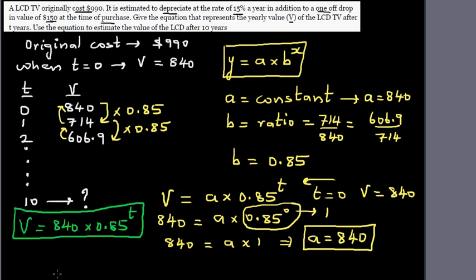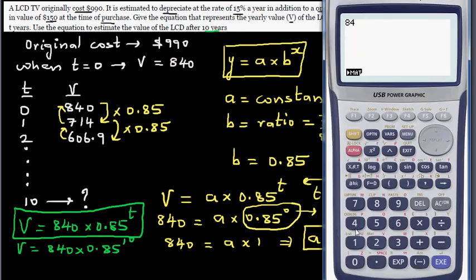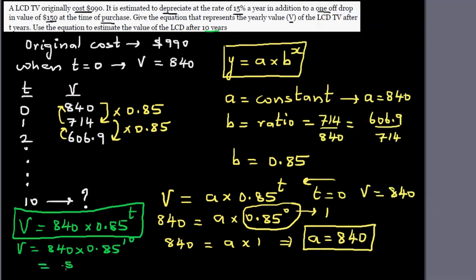So to check your answer on a graphic calculator, whether this makes sense. Okay, now before I do that, let's finish off. What's the value after 10 years? So you have to just put 10 here. So V is 840 times 0.85 raised to 10. So you need to get a calculator. So 840 times 0.85 raised to, this is the raised to key, this carat key, or this is also called a cap or a hat key, which is $165. $165 to 2DP. But if you want to write as a whole number, it is $165. So after 10 years, the LCD will cost $165 as a whole number.